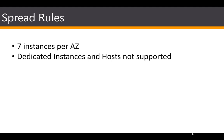You do not have to put EC2 instances in placement groups, but it is always best practice and recommended, especially if you have mission-critical applications or your entire network infrastructure is on AWS. On-premises, you can physically distribute and locate servers separately, whereas with AWS you're limited to the physical access you have to the data center. Utilizing placement groups is the best way to emulate that physical distribution within AWS.